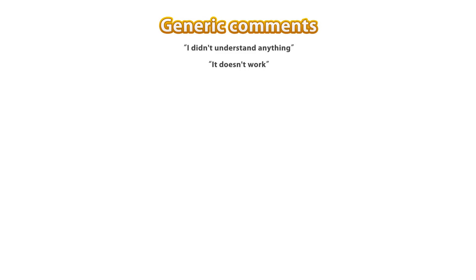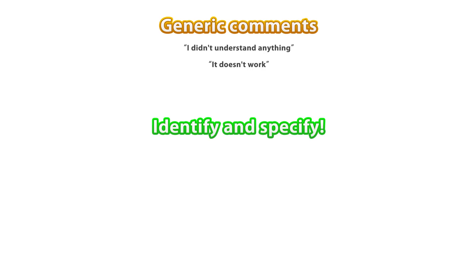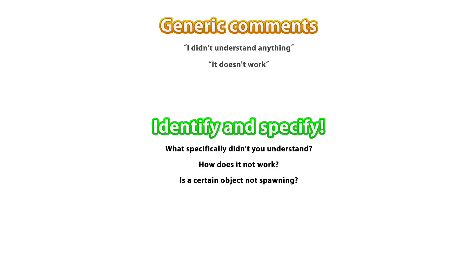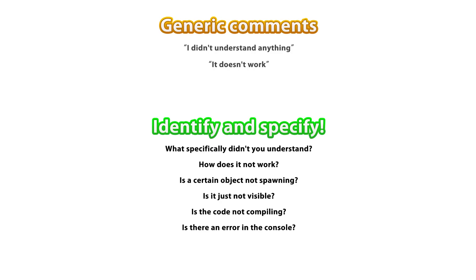Before I get to any specific questions, let me answer a general comment I see many times — usually some form of 'I didn't understand anything' or 'this doesn't work.' My answer to those is always the same: you need to first identify and specify exactly what you don't understand. I'm trying to help people, but there's not much I can do if someone just says that. So what specifically didn't you understand? How exactly does it not work? Is it a certain object that is not spawning, or maybe it's just not visible, is the code not compiling, are there some errors in the console? Without knowing exactly what doesn't work, there's really not much I can do to help.